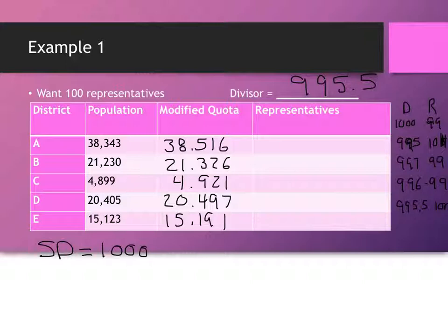Our numbers of representatives, here we'd get 39. Here we'd get 21. Standard rounding would give you 5, would give you 20, and would give you 15 in the last spot. Which, if you add that all up, you should get 100 total representatives. So that's Webster's method.